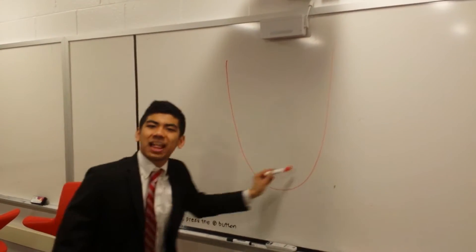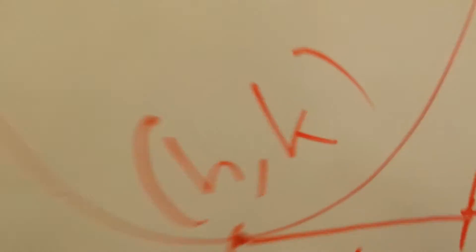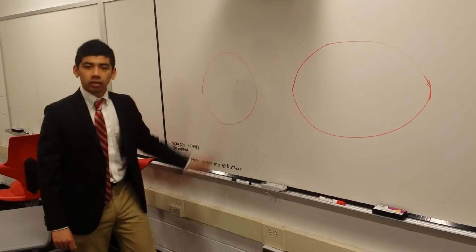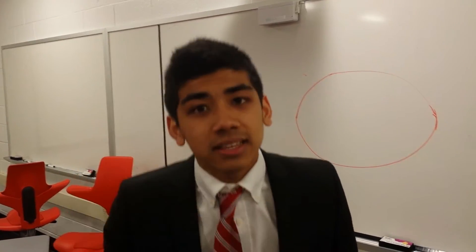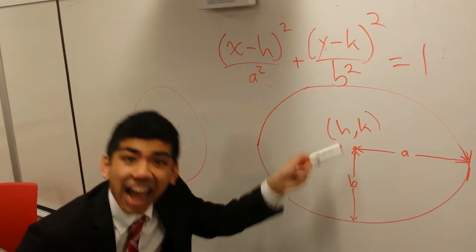Parabolas are the conic section shaped like a half-pipe. Let me shed some light on them just like a flashlight. Change a times x squared when you move horizontally. k and h are vertices. An ellipse is just a circle, but squished. If you gotta graph it, just remember this: these numbers down here are the squares of each axis.